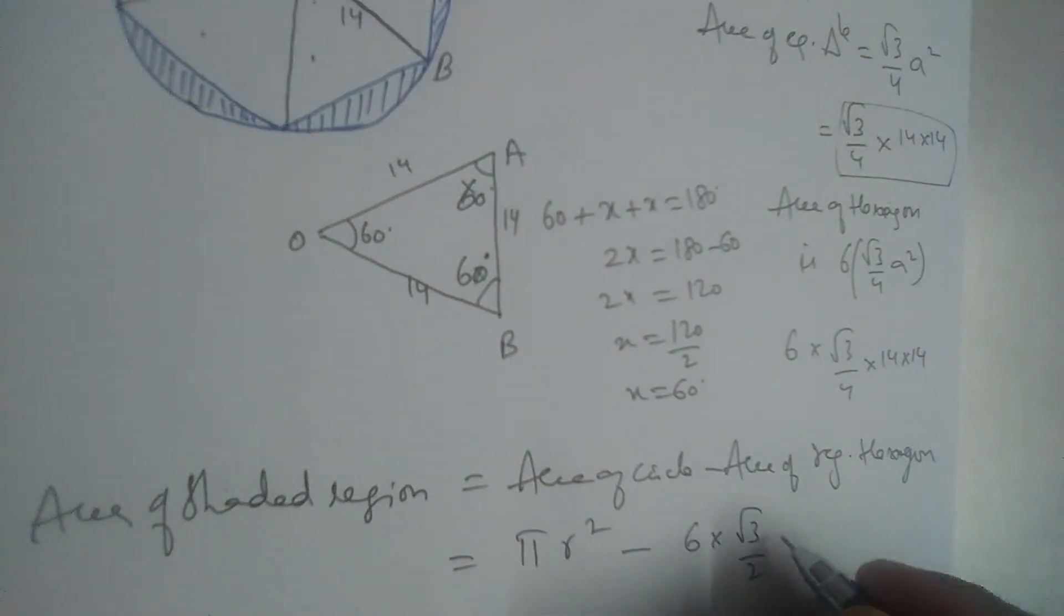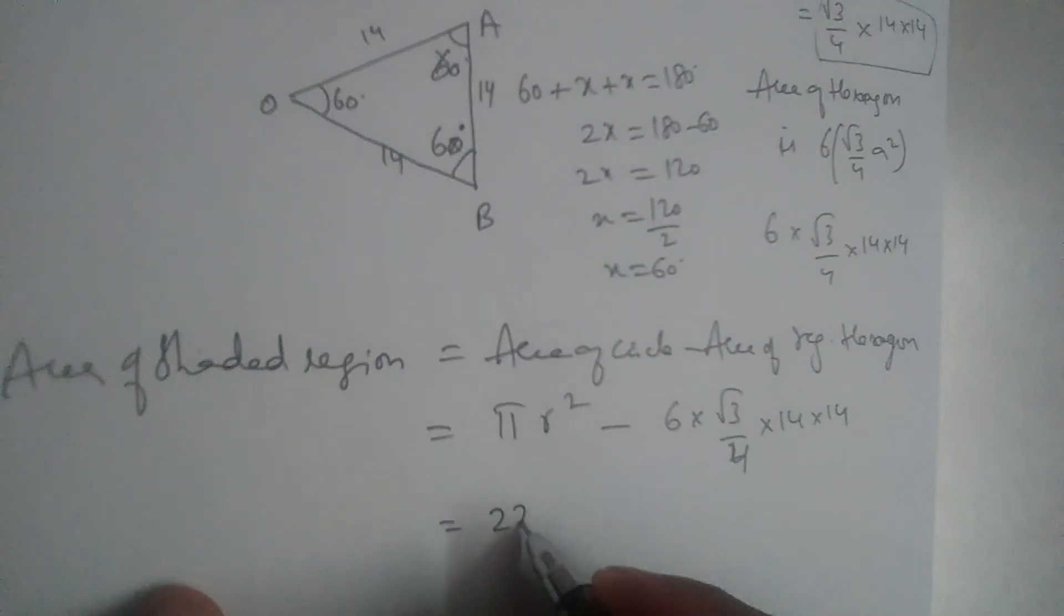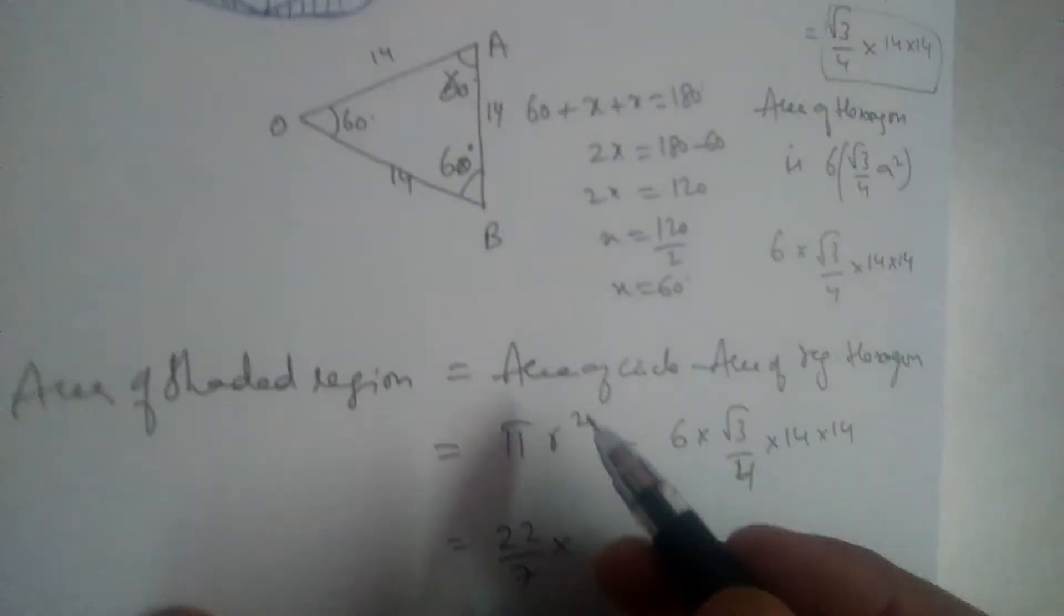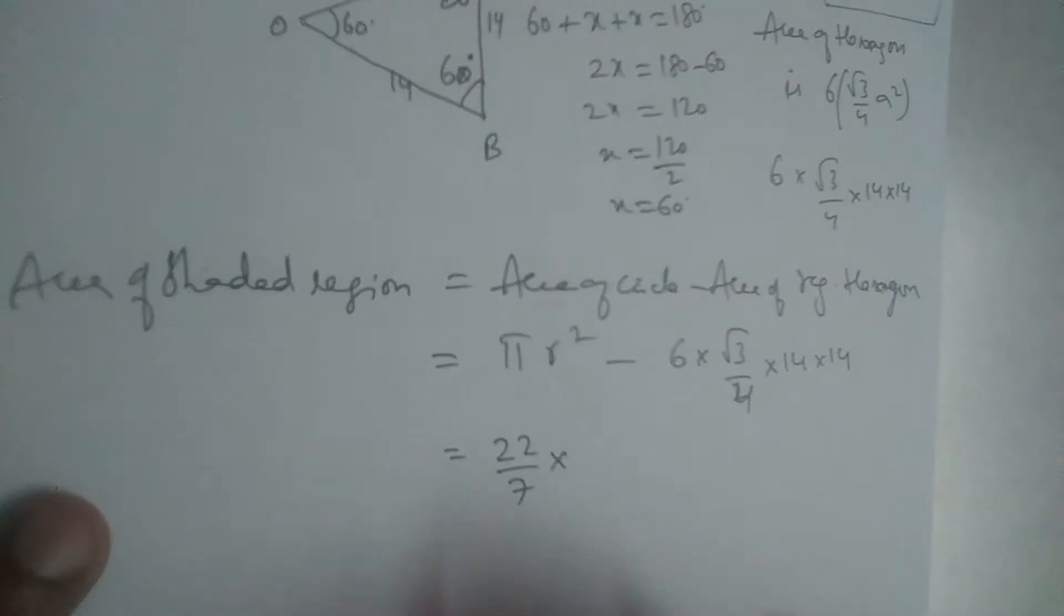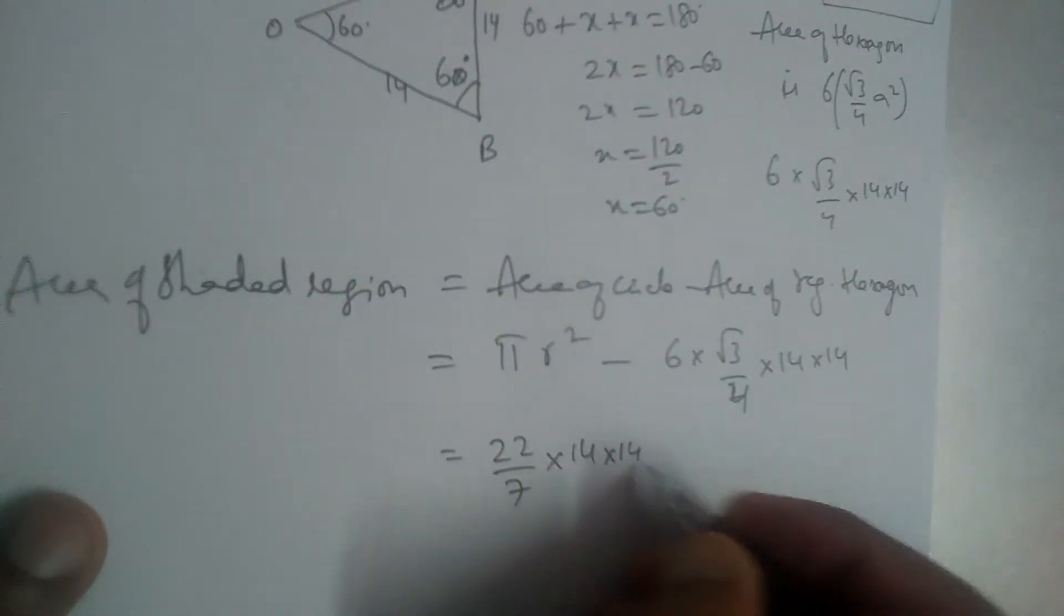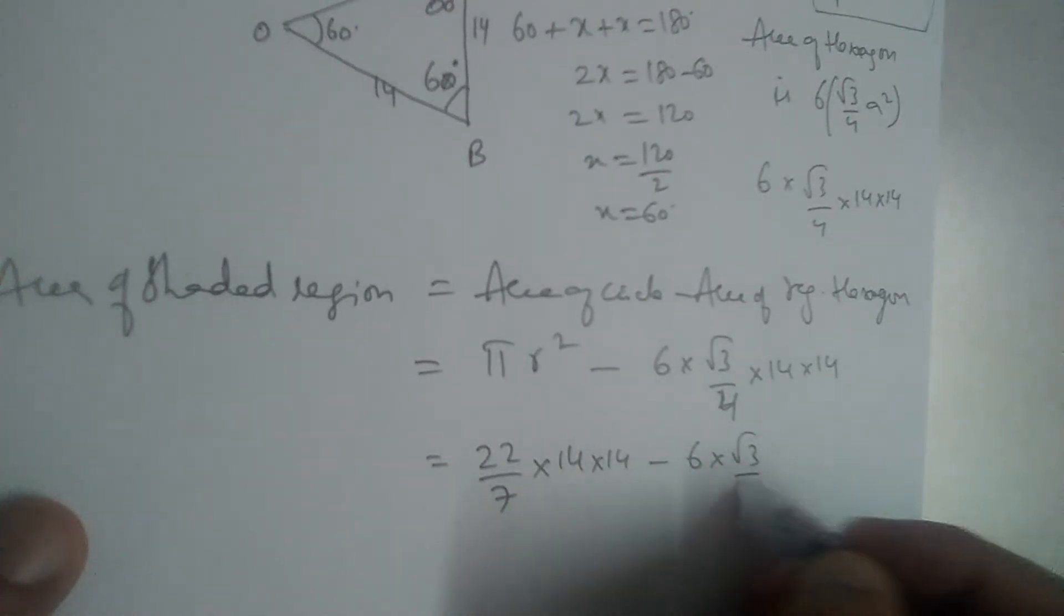It is 6 times root 3 by 4 into 14 into 14. So pi is 22 by 7. What is the radius? 14. So it is 14 into 14 minus 6 into root 3 by 4 into 14 into 14.